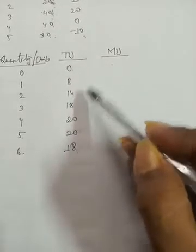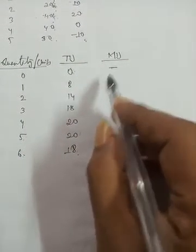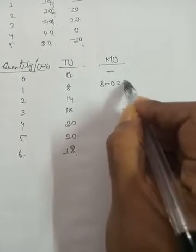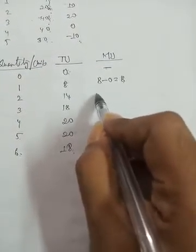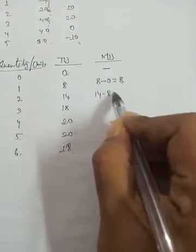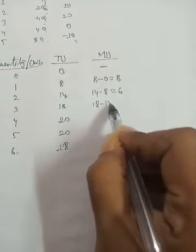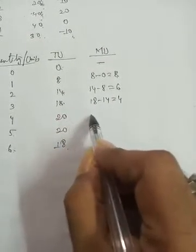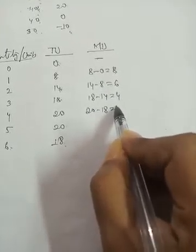So total utility first increases and then falls. Now, marginal utility is the change in total utility. At 0 units there is no change. The 1st unit: 8 minus 0 equals 8, so marginal utility is 8. Then 14 minus 8 equals 6. Then 18 minus 14 equals 4. Then 20 minus 18 equals 2.